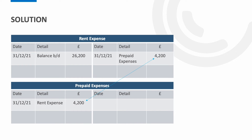We now need to look at closing off these accounts as part of the year-end process. To do this we transfer the balance on the rent expenses to the profit or loss. In this example that would be the current balance of £26,200 minus the prepaid expense of £4,200, giving you an amount to be transferred of £22,000. We then credit this to the rent expense and debit the profit or loss. Within the prepaid expenses we simply need to balance off the account, which will then be brought down into the next period.